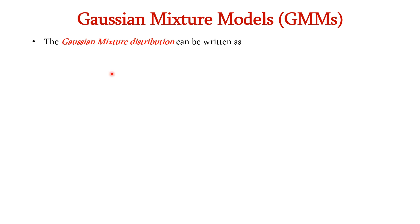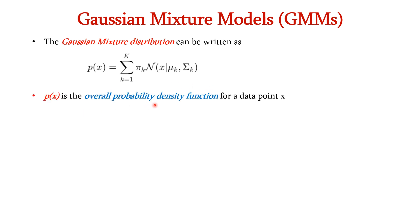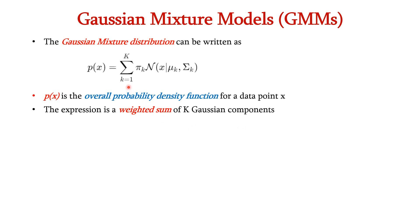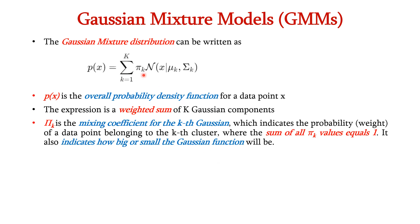Now let us see the formal representation of the Gaussian mixture distribution, which is written as: P(x) = summation from k=1 to K of pi_k times the normal distribution of x given mu_k, sigma_k. Here P(x) is the overall probability density function for a data point x. The right-hand side is the weighted sum of k Gaussian components, where pi_k is the mixing coefficient for the kth Gaussian, indicating the probability of a data point belonging to the kth cluster.